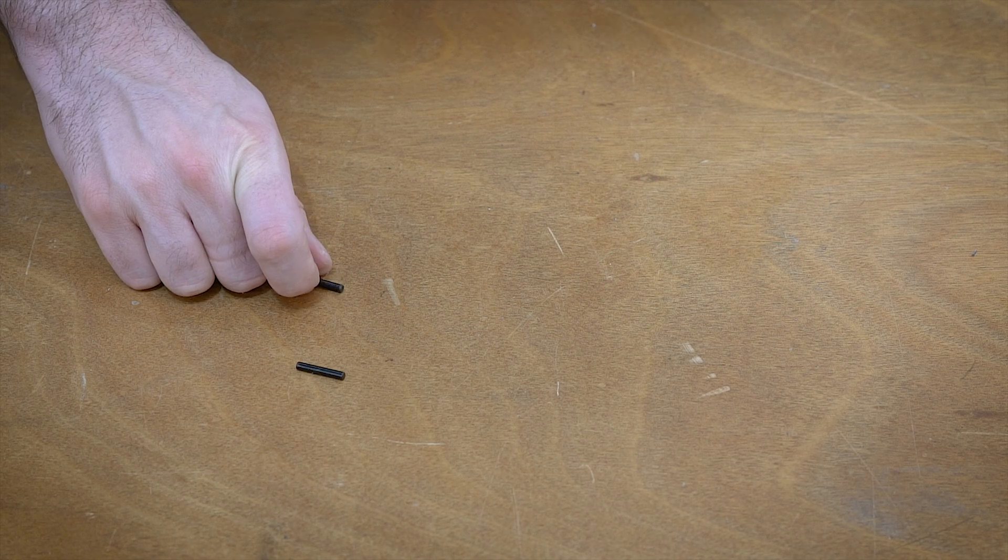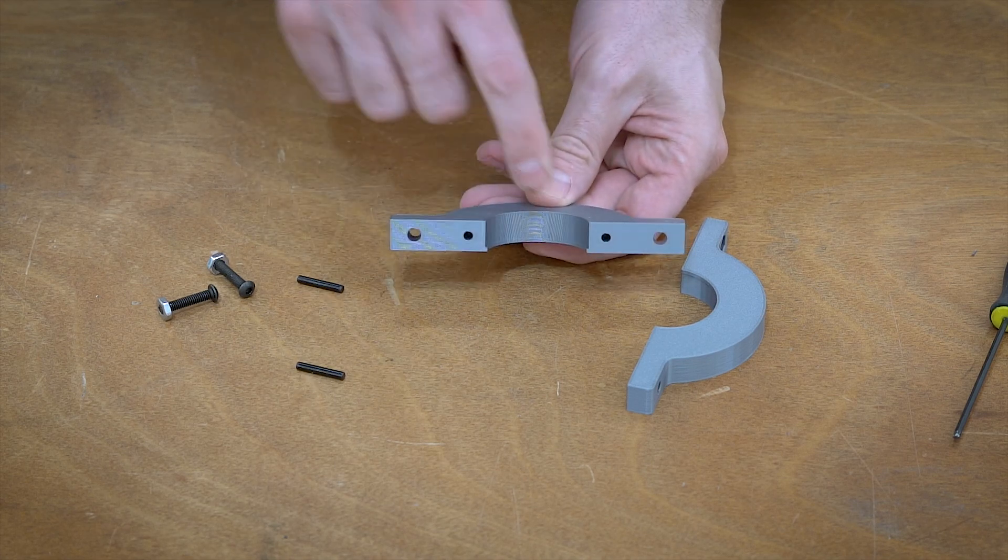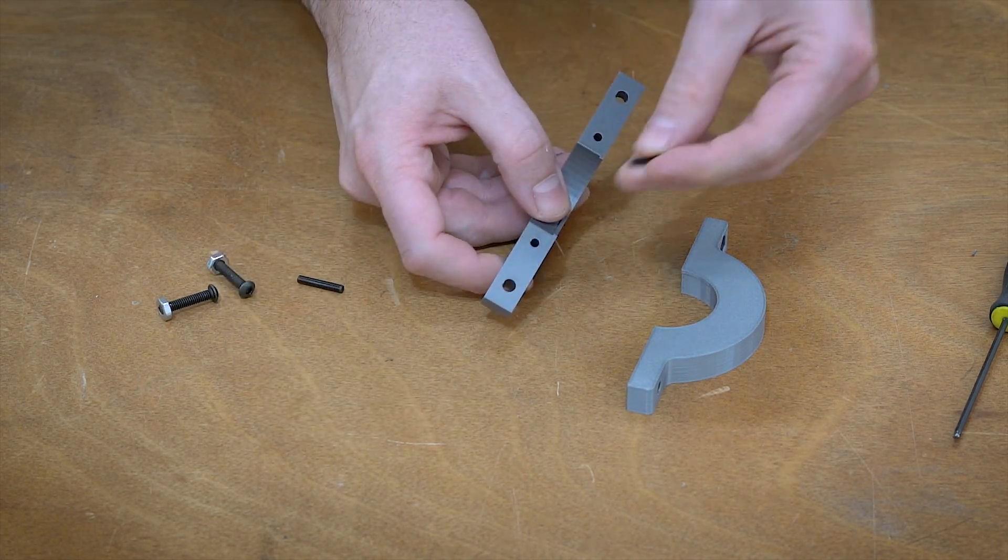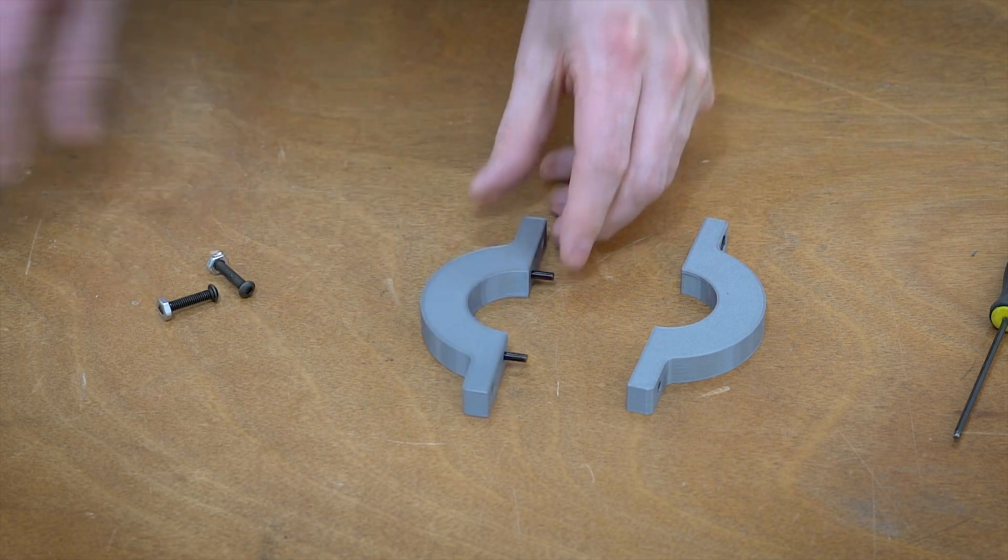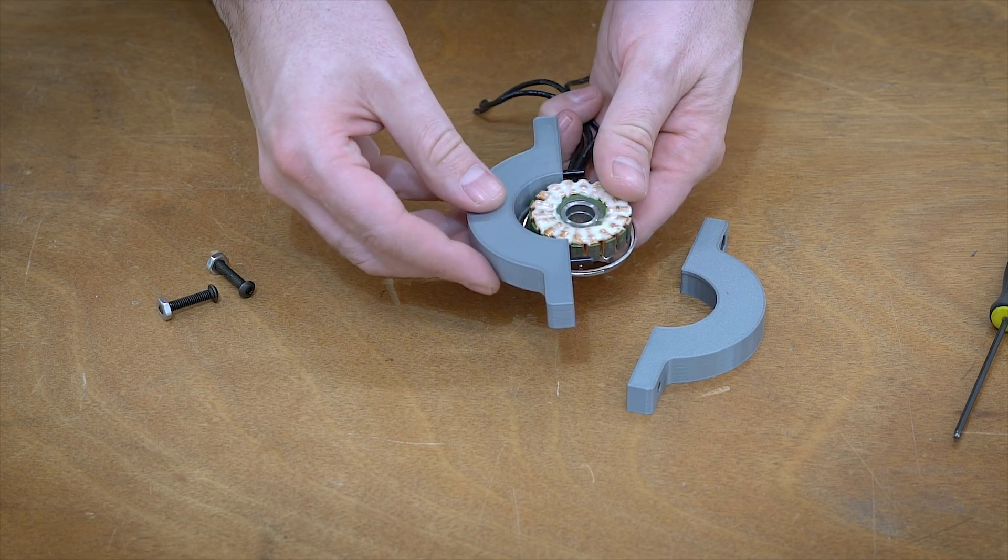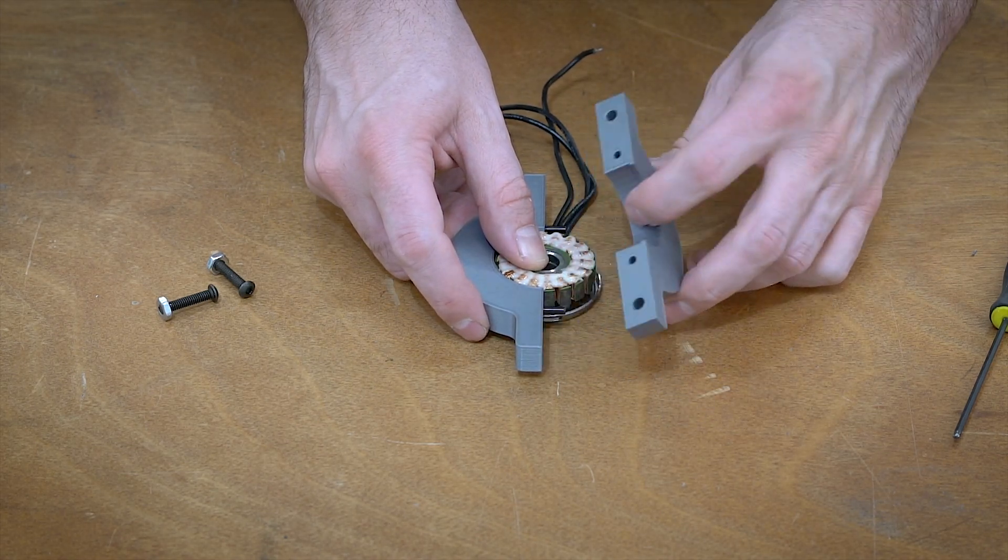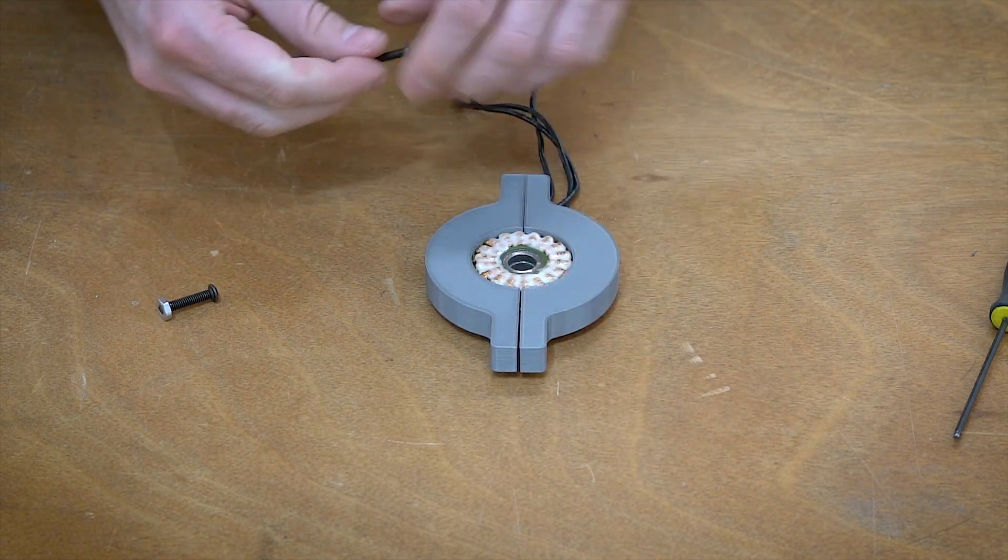So this is what I came up with for the 3D printed jig. It's two pieces that clamshell together and on the inside there's just this little bit of a ridge. I'm using two dowel pins to locate the two pieces together so they don't slip or anything like that. And then you just sandwich it around the stator and the lip is at the very bottom so it gives it that surface to press against.